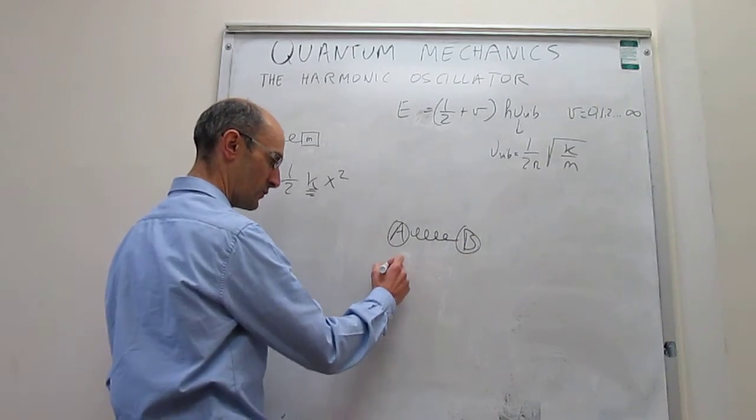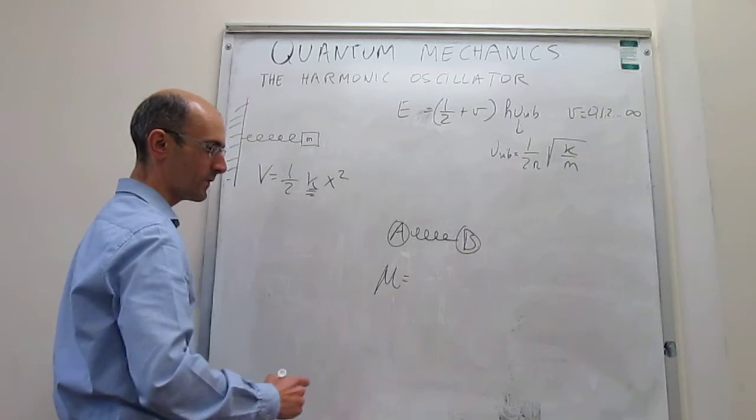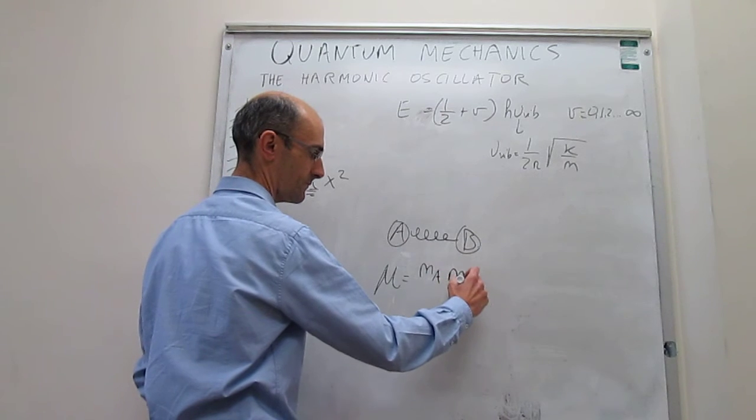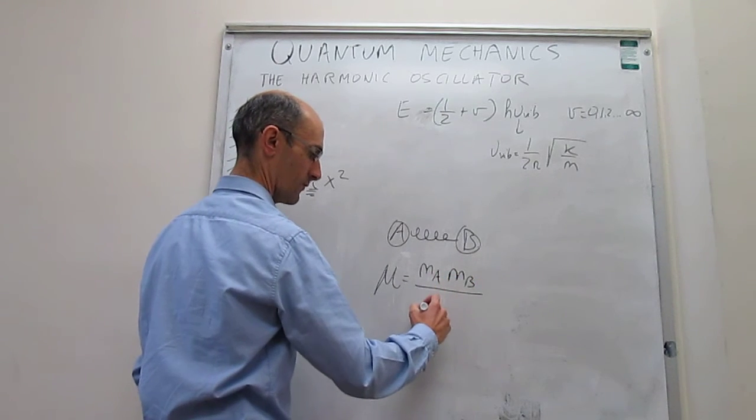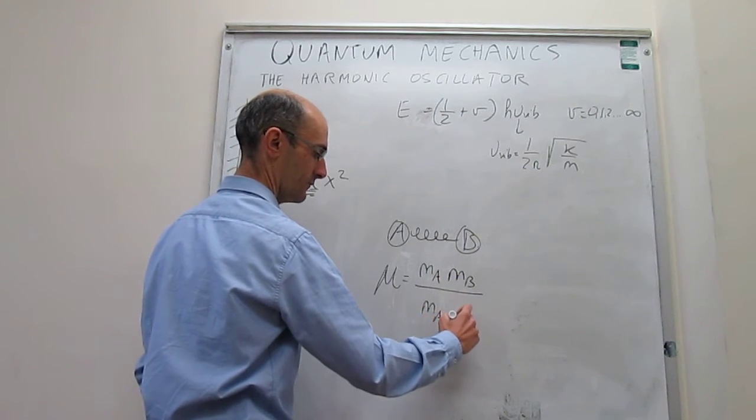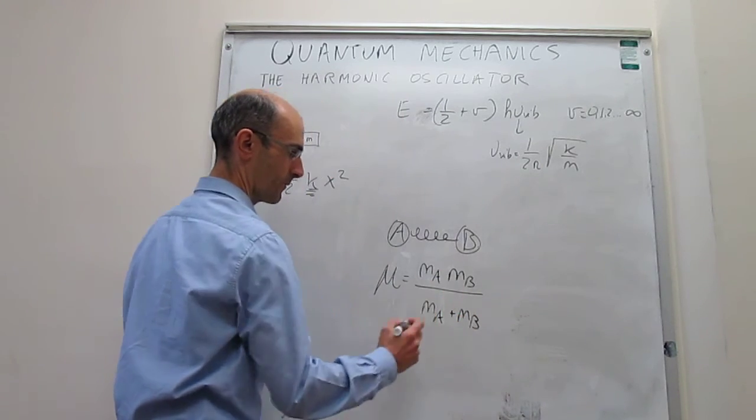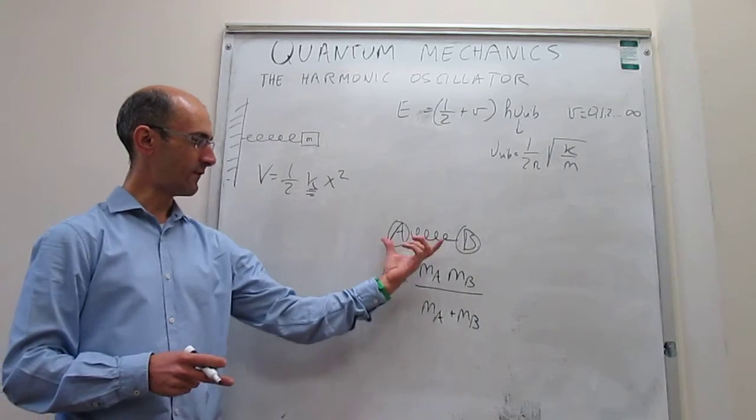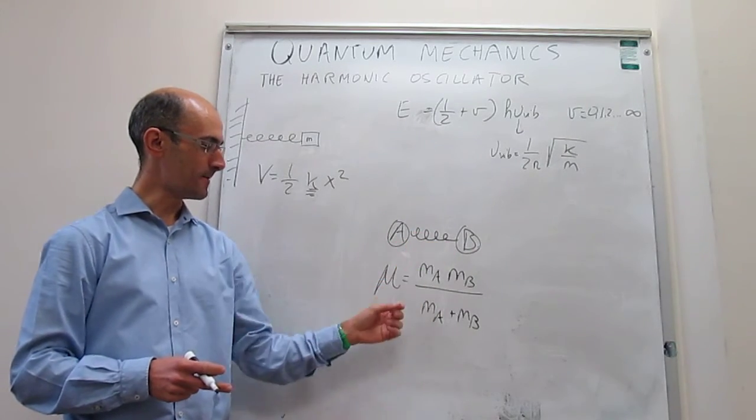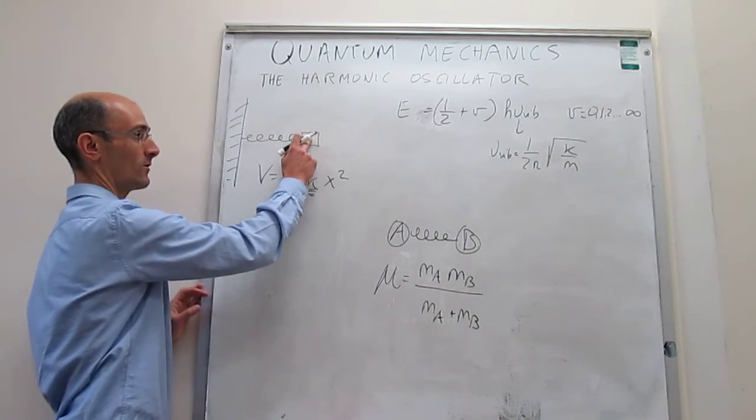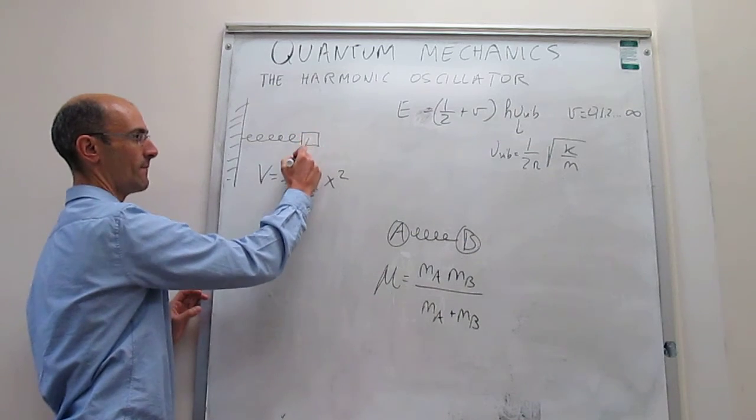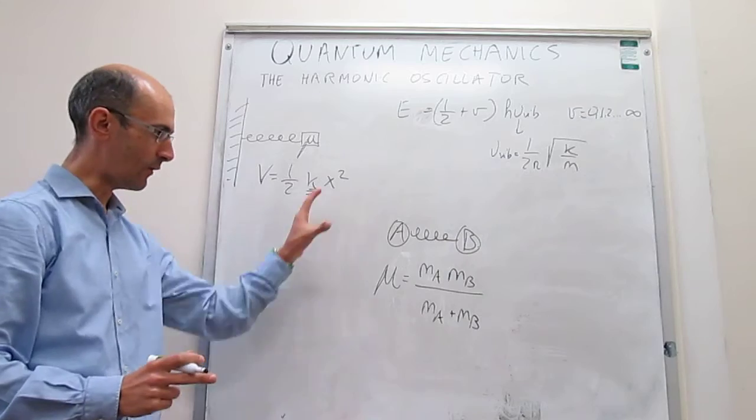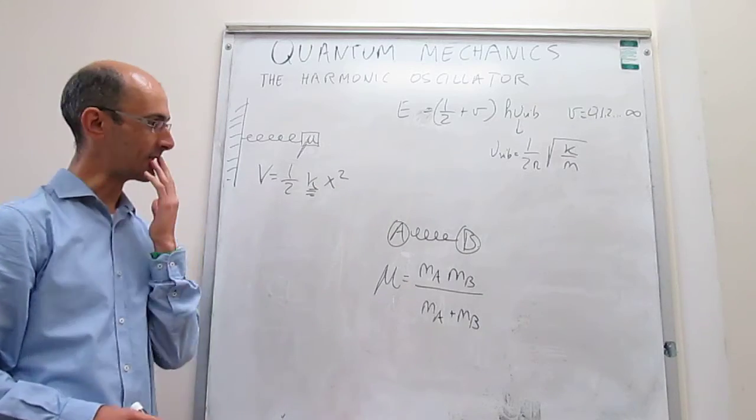The reduced mass of this molecule is μ = (m_A × m_B)/(m_A + m_B). Mathematically, it's equivalent to treat the vibration of this diatomic molecule AB as a harmonic oscillator where the mass is the reduced mass from this equation. Both of those motions will be exactly identical.